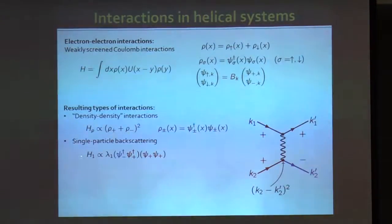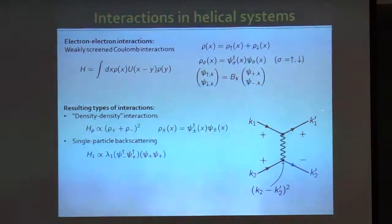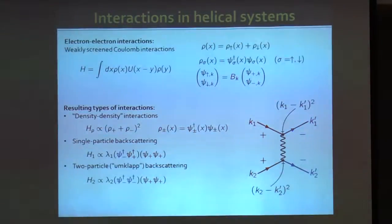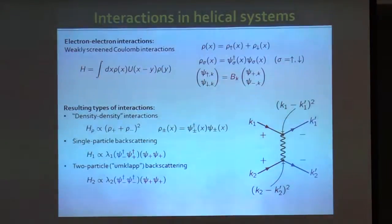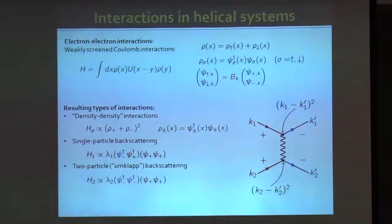In addition to the simple density-density term, I get single-particle backscattering — illustrated by a Feynman diagram where two right movers come in, one remains a right mover and the other is backscattered into a left mover. The vertex factor scales with the difference in momenta squared. The other term is two-particle backscattering, also called umklapp scattering: two right movers come in and two left movers go out, with each vertex carrying a momentum-difference squared factor.